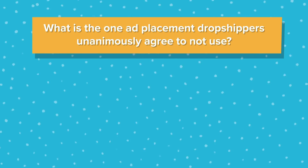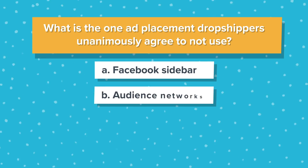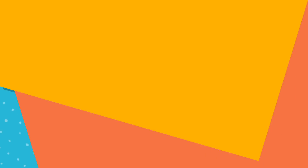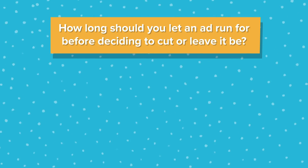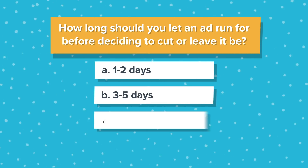Okay, it's homework time. Here's how it's going to work — I'm going to ask questions, then join me on Tuesday, May 7th at 11am EST for a live Q&A. I'll share the answers and also address any questions you have about creating your first Facebook ad. Here are the homework questions. Number 1: What is the one ad placement dropshippers unanimously agree not to use? Is it A — the Facebook sidebar, B — Audience Networks, or C — the Instagram newsfeed? Question 2: How long should you let an ad run before deciding to cut it or leave it be? Is it A — 1 to 2 days, B — 3 to 5 days, or C — 7 to 10 days?